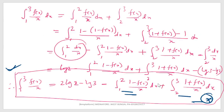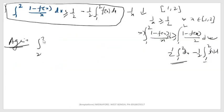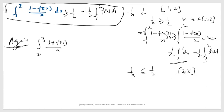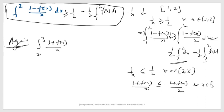Similarly, for the integral from 2 to 3 of (1 + f(x))/x dx: since 1/x ≤ 1/2 for all x in [2,3], we have (1 + f(x))/x ≤ (1 + f(x))/2 for all x in [2,3]. Since (1 + f(x)) is a positive function, both sides integrate from 2 to 3.